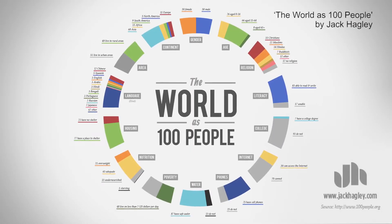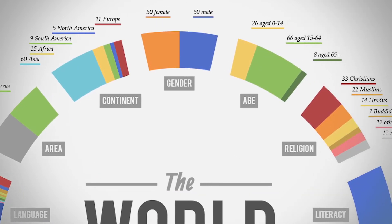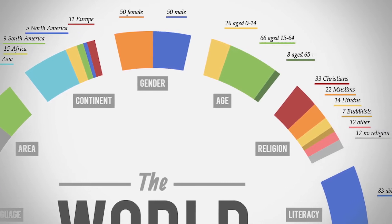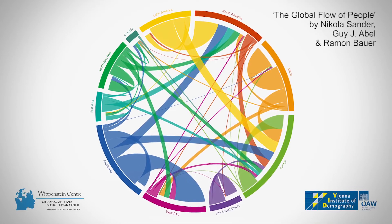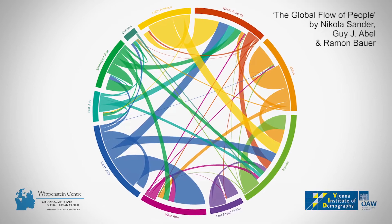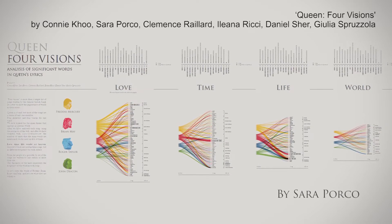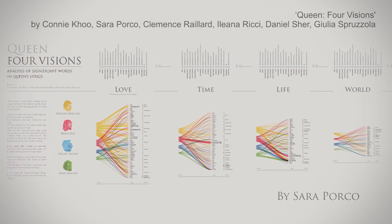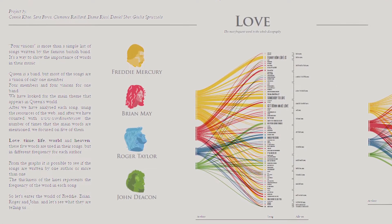The world as a hundred people shows the people of the world as percentages grouped by gender, age and, for example, access to clean water. The global flow of people shows migration around the world in an aesthetically appealing way. Four visions shows the lyrical themes that Queen sang about, divided up by who wrote the song. You can see that Freddie Mercury wrote a lot about love. At a glance, do you like some of these visualisations more than others? This could be for a number of reasons.